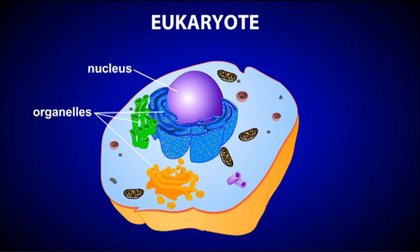In contrast, eukaryotic cells contain a membrane-bound nucleus and other membrane-bound organelles. The name also provides a clue: 'eu' means true, and 'karyon' means nucleus — so eukaryote means 'true nucleus.' Eukaryotic cells are larger and much more complex than prokaryotic cells.